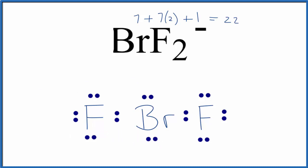And that looks like a pretty good Lewis structure. Each of the atoms here has 8 valence electrons. But remember, we have 22 total valence electrons, so we have 2 extra valence electrons and we need to put them somewhere.